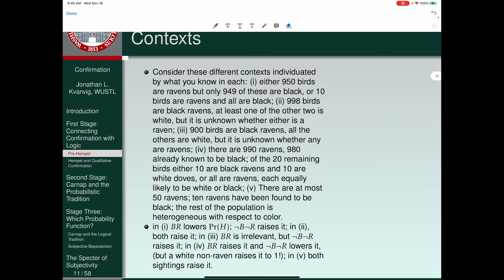Now he does this because he says, look, whether or not your sample confirms that all ravens are black depends on the context. In the first context, seeing a black raven lowers the probability of H. Seeing a non-black non-raven raises it. In the second context, both raise it. In the third context, seeing a black raven is irrelevant, but seeing a non-black non-raven raises it. In four, seeing a black raven raises it, and seeing a non-black raven lowers it, but a white non-raven raises it to the probability of one. In the fifth, both sightings raise it.